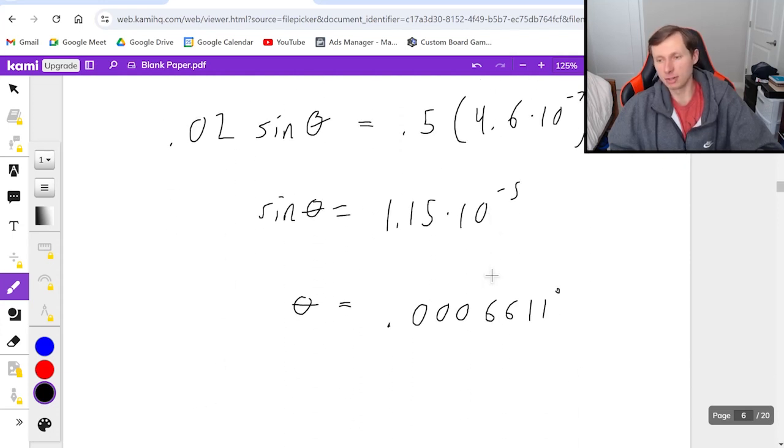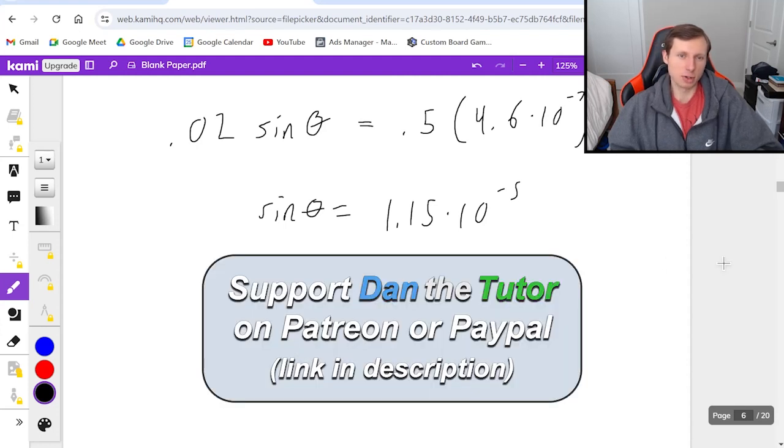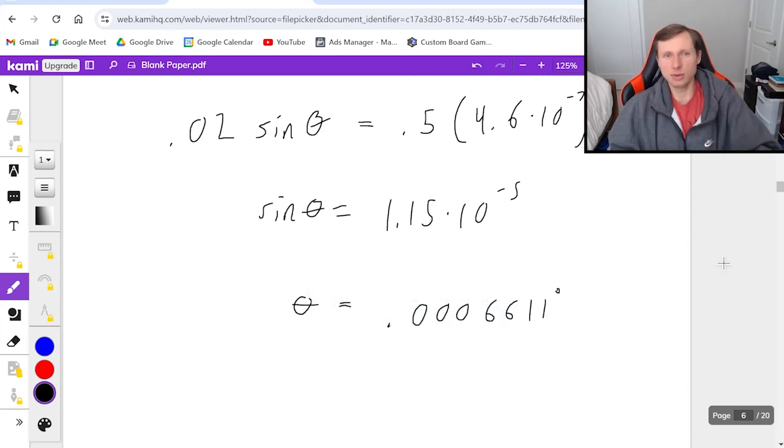So if you use this strategy, you'll get the right answer almost every time. But technically it's an approximation, so take it with a grain of salt. That's all the questions I have today on Young's double slit experiment. Thank you all for watching. Hope you have a great rest of your day, and I'll see you in the next video. Take care and bye-bye.